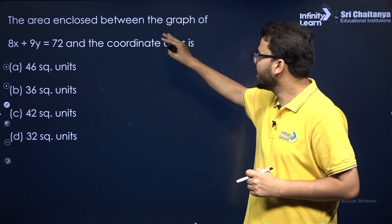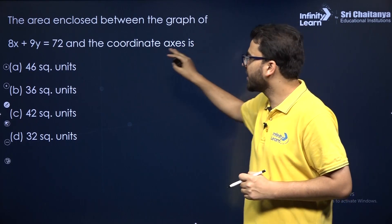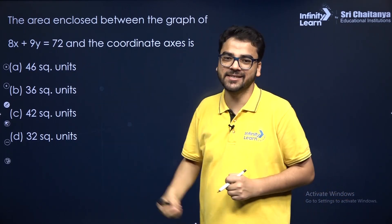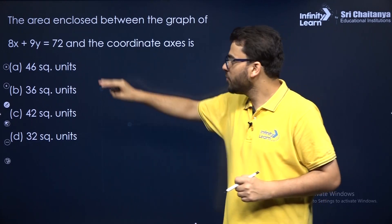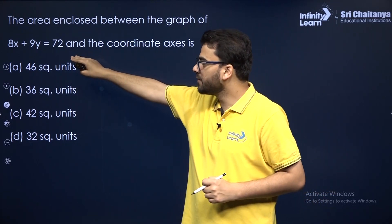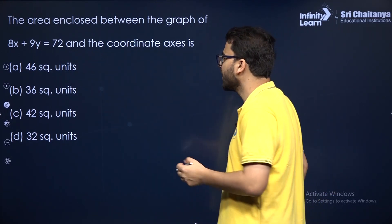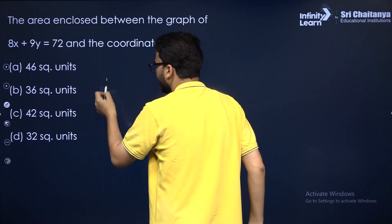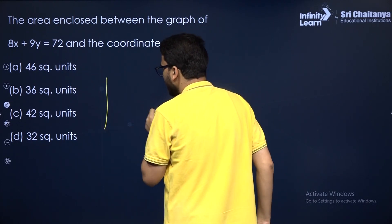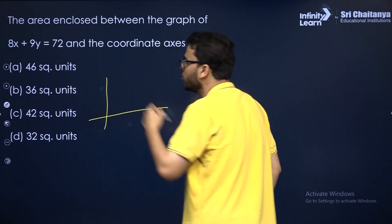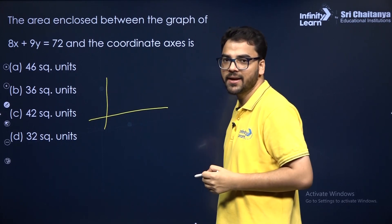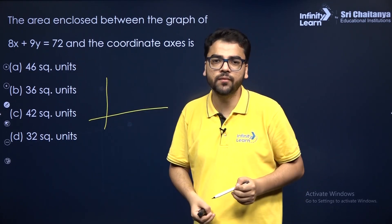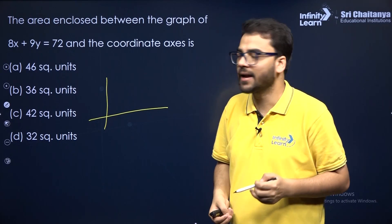We have to find the area enclosed between the graph of this equation and the coordinate axis. When you make the graph of this equation, you need the coordinates of two points in order to make its graph, because this is a linear equation in two variables, so its graph will be a straight line.